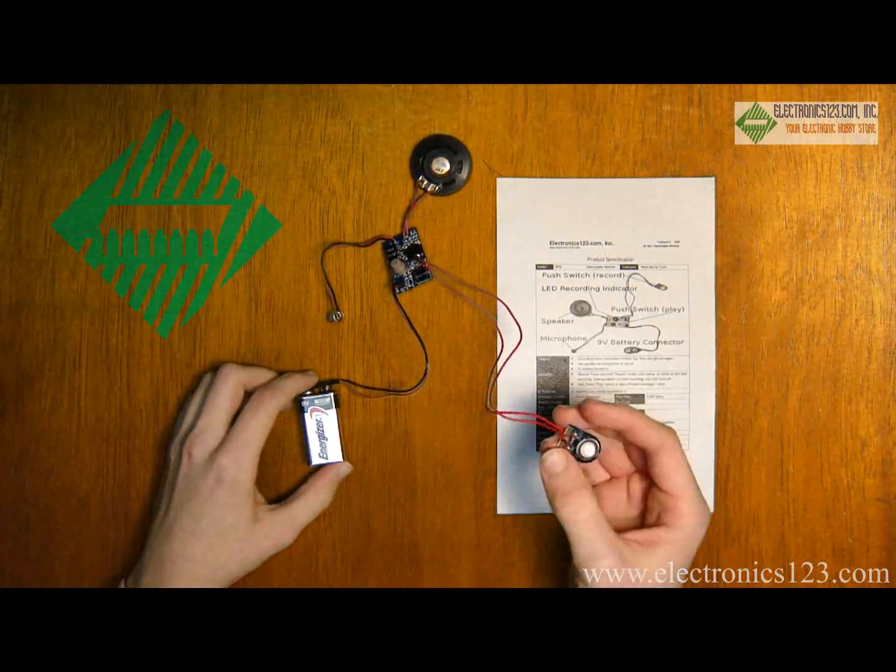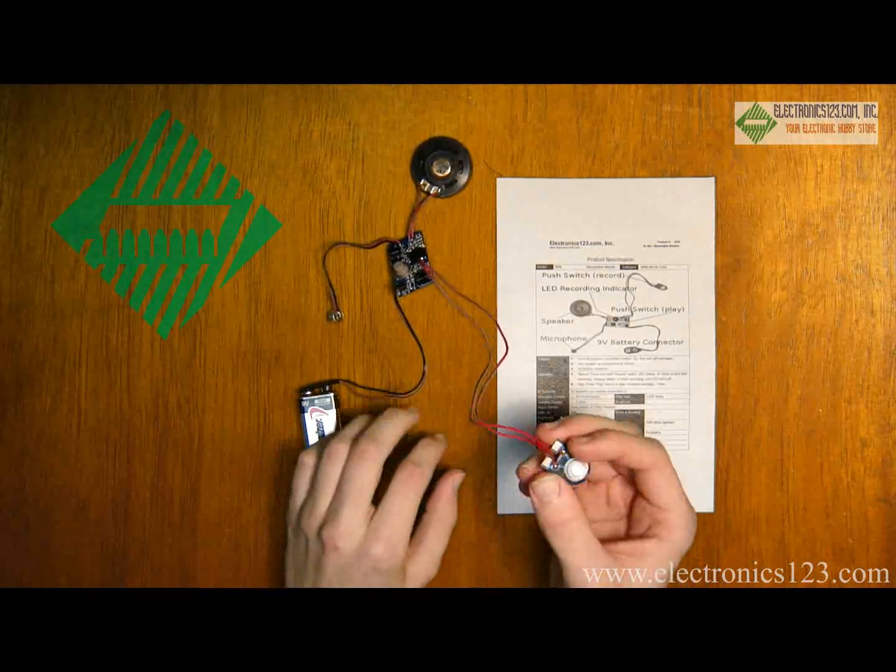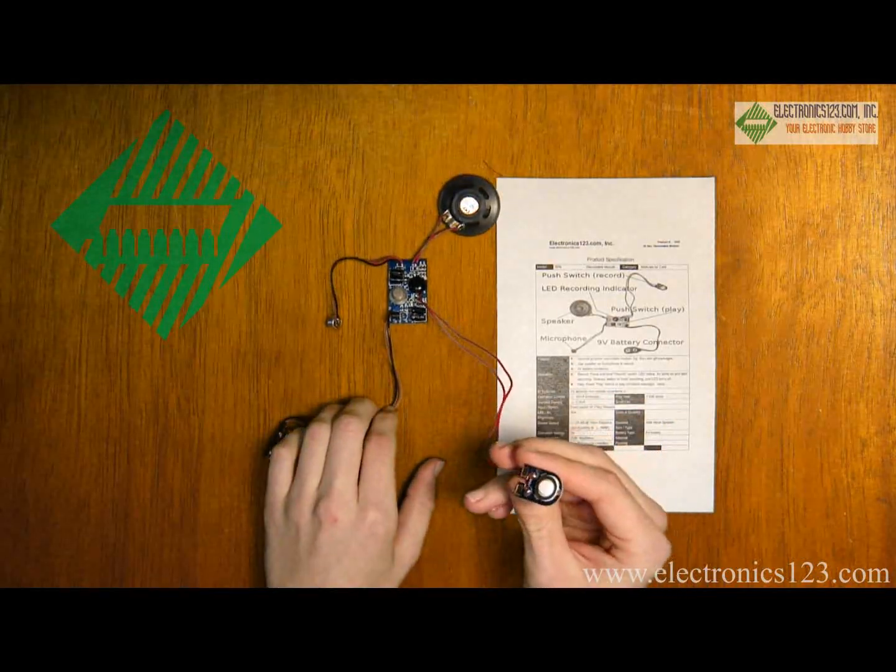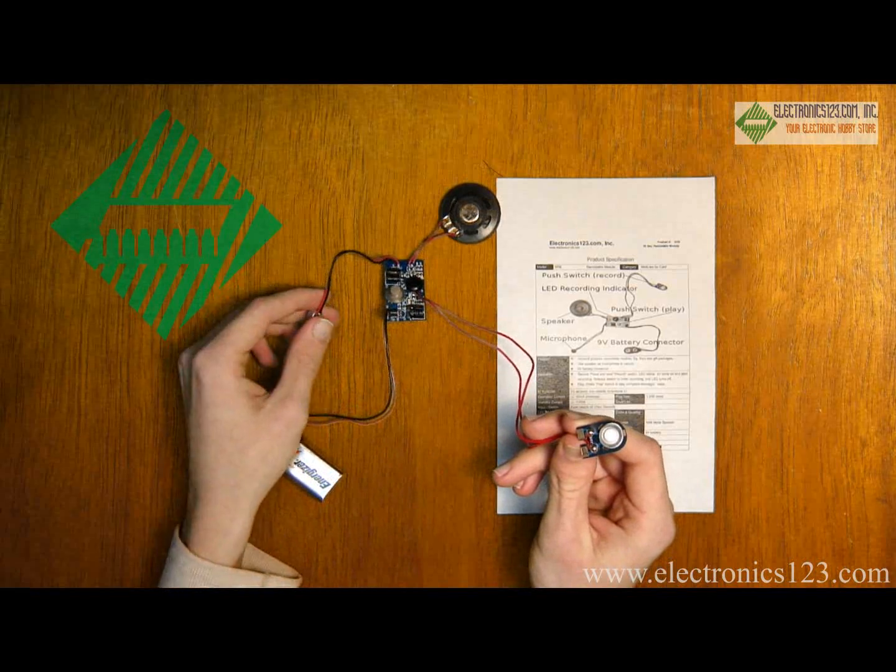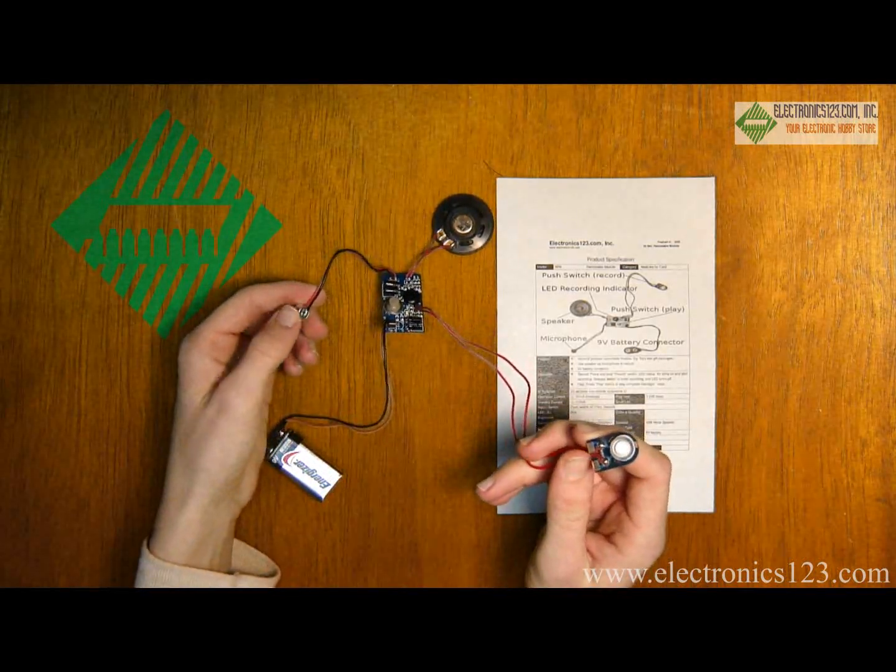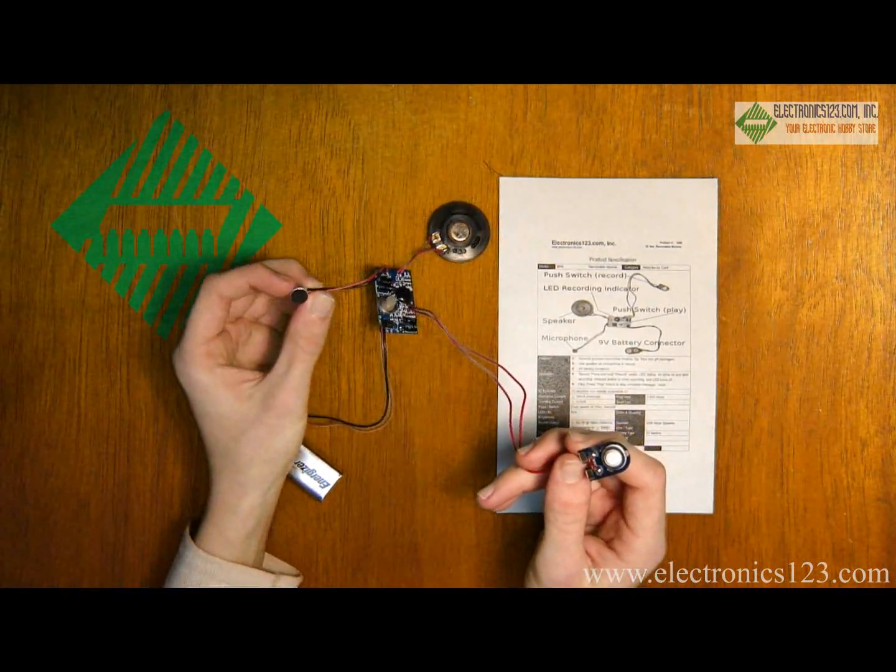Locate the record button. The record button is on the end of two red wires that are connected to the main circuit board. Also locate the microphone, which is connected to a black and red wire on the main circuit board.